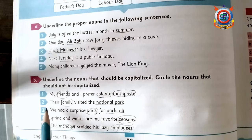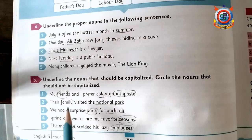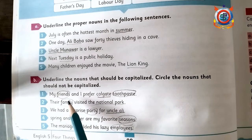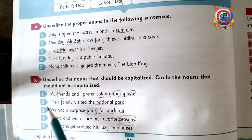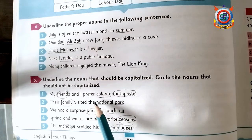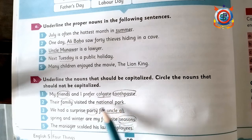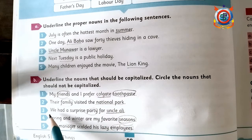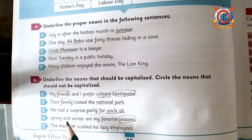Second sentence: 'Their family visited the National Park.' Family is a common noun — circle it. National Park should be capitalized, so it is underlined. Third sentence: 'We had a surprise party for Uncle Ali.' Circle party, and underline Uncle Ali.